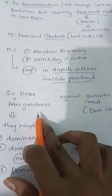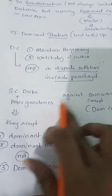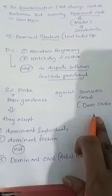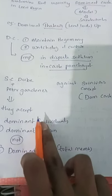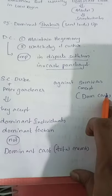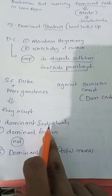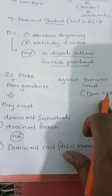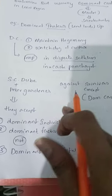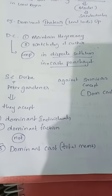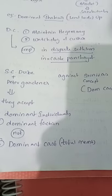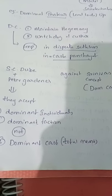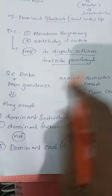S.C. Dubey and Peter Garner are two scholars who argued against Srinivas's concept of dominant caste. According to them, importance should be given to dominant individuals and dominant factions, not the dominant caste as a whole, because within any dominant caste not all members are dominant — only some individuals or factions are. They thus favor the concept of dominant individuals and factions over dominant caste.